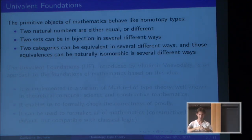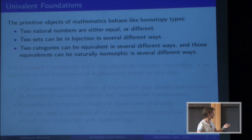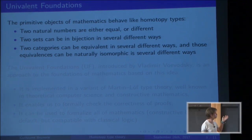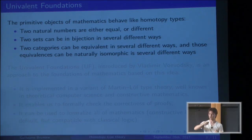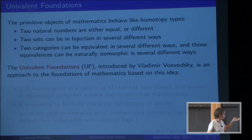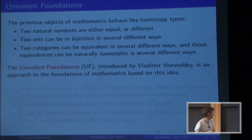If you take two categories, they can be equivalent in many different ways, and those equivalences can themselves be naturally isomorphic in many different ways. That's similar to homotopy theory, where you have points, you can have several different paths between them, and several different homotopies between those paths, and so on.